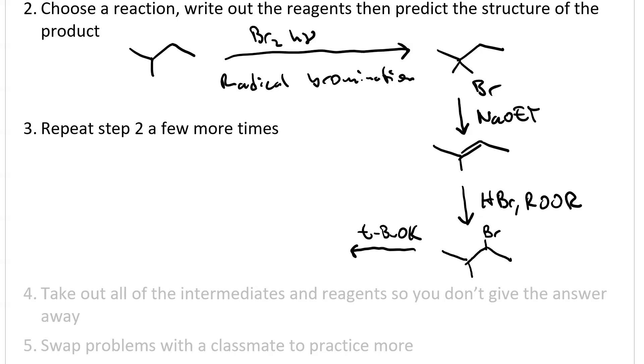Now if I use tert-butoxide, that gives me the Hoffman elimination. So the less substituted alkene. And if I do anti-Markovnikov hydrobromination, now I've got a primary alkyl bromide.